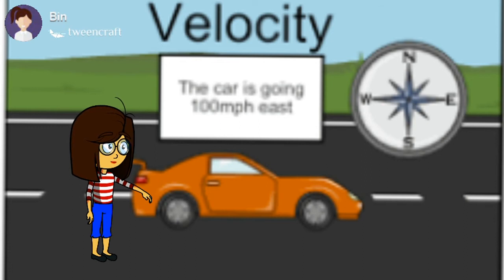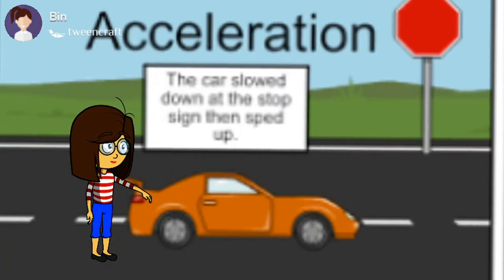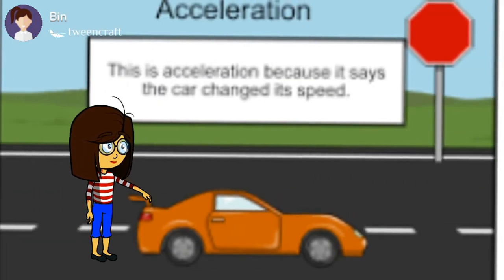Velocity is also measured with direction, so velocity is a vector quantity. When a car sees a stop sign and slows down or speeds up, we can see how the speed is changing — and we call that acceleration.